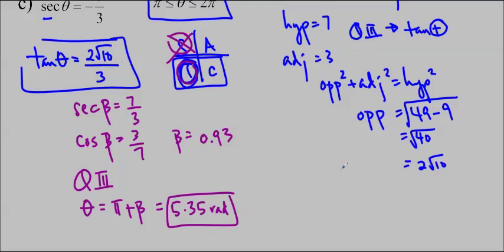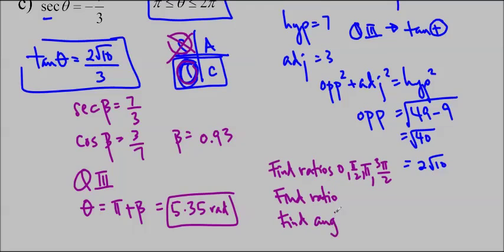So we did a few things today. We talked about how to find the ratios for 0, pi over 2, pi, and 3 pi over 2. We talked about how to find the ratio given the angle, how to find the angle based on the ratio, and how to find the ratio given another ratio. Bring any questions you have to class, and I will see you soon. Thanks for watching.